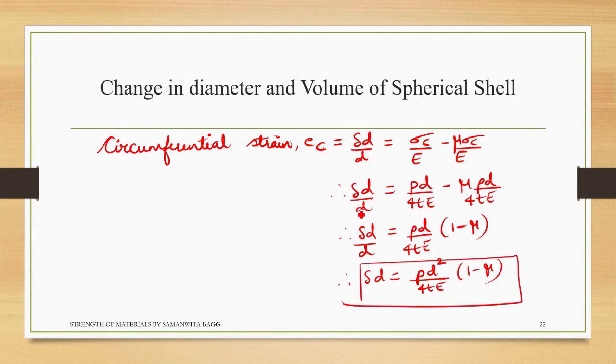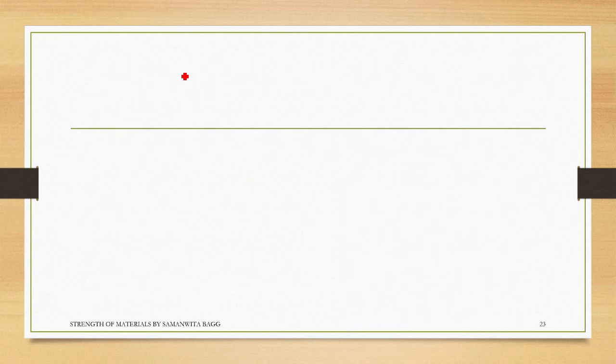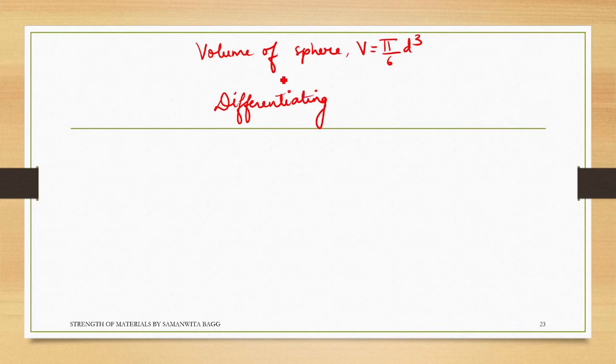This is the formula for change in diameter for a spherical shell. Now let's talk about the volume part. We know the volume of sphere, V will be pi by 6 d cubed. So if I differentiate this volume with respect to diameter, I will get delta_V is equal to pi by 6, this becomes 3d squared.